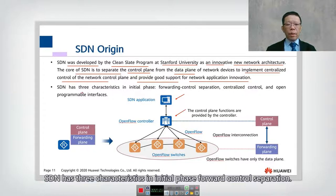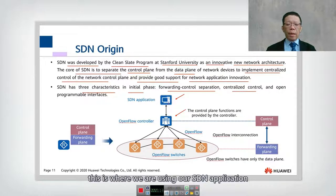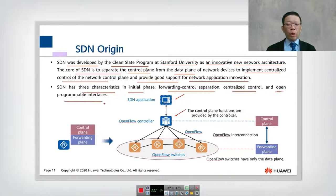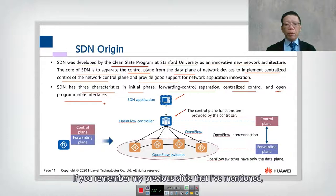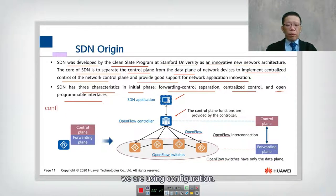SDN has three characteristics in its initial phase. First, forward-control separation — the data and control planes are separate. Second, centralized control — we use the SDN application to control the controller. Third, open programmable interfaces, which is important. Previously, all devices used configuration-based management; now we are moving to programmability.